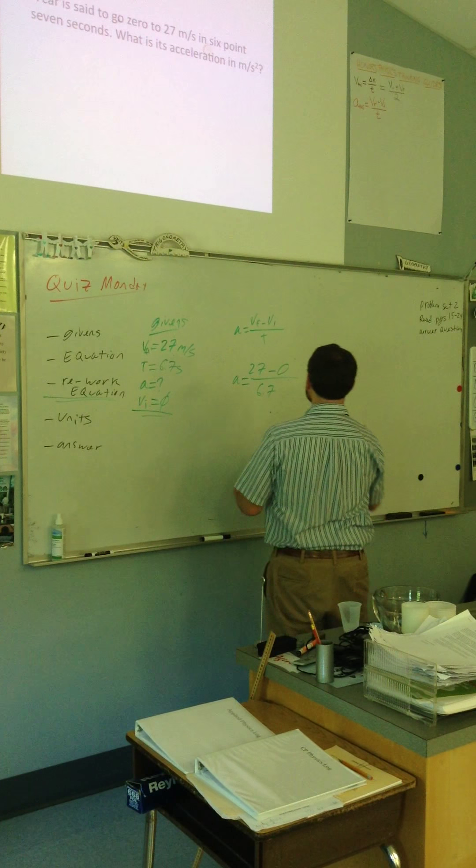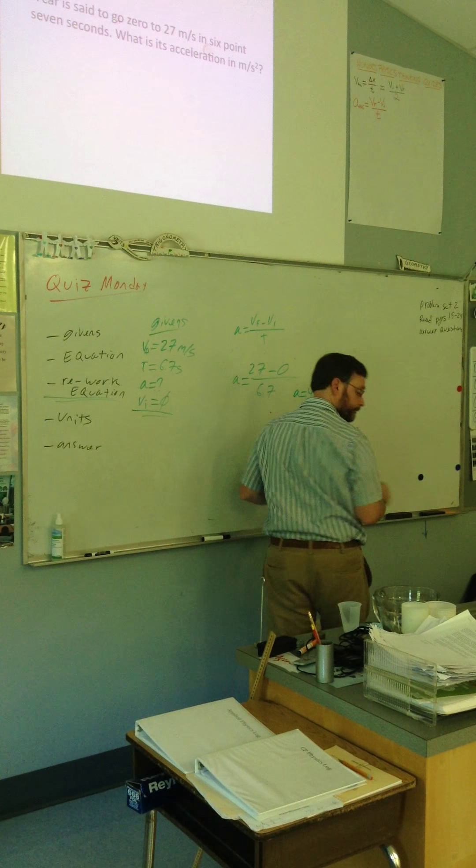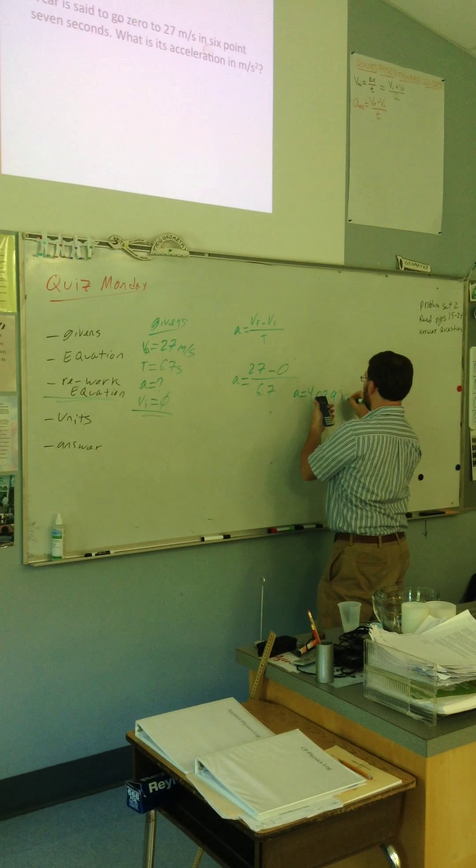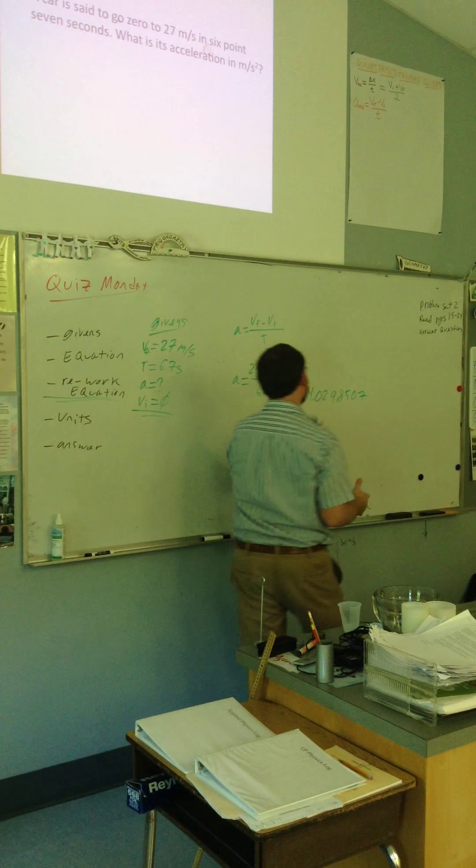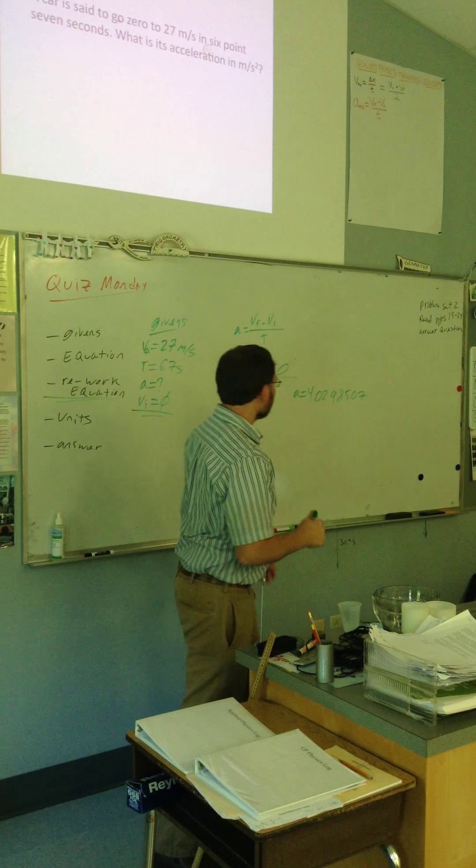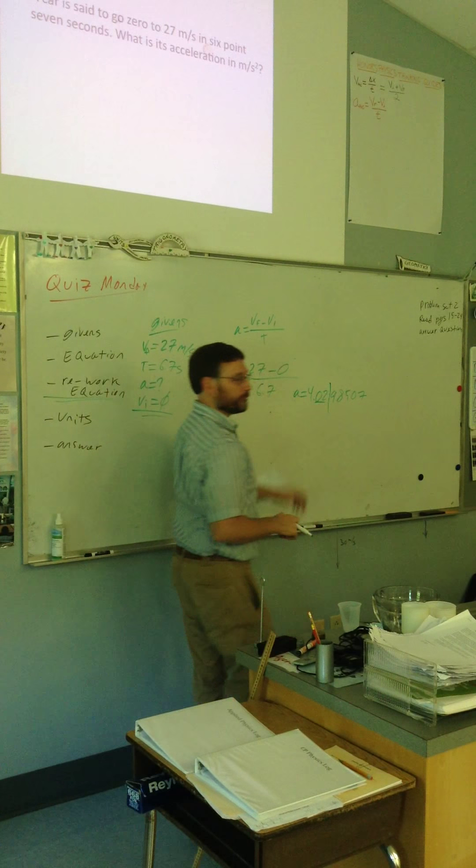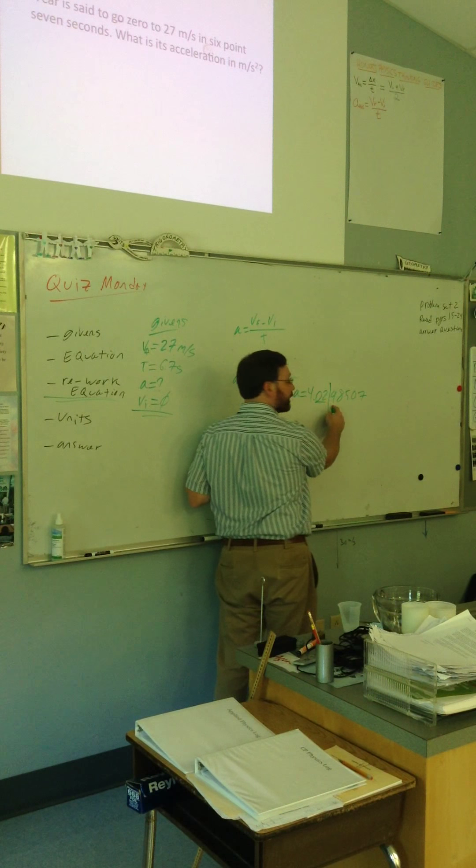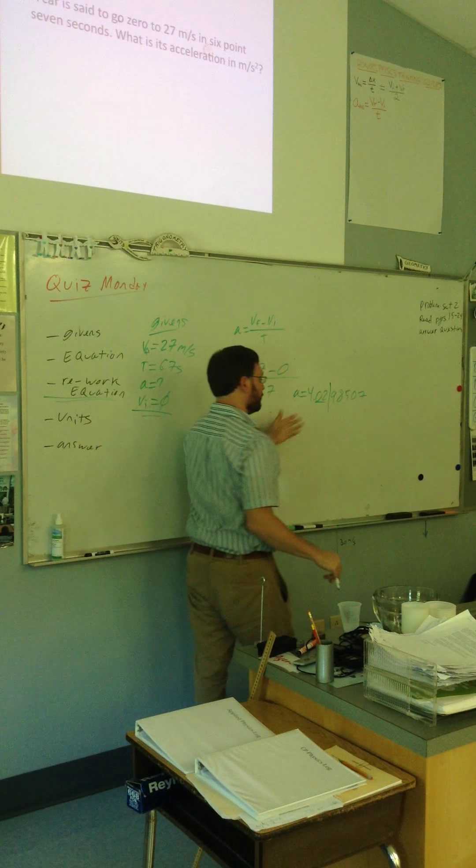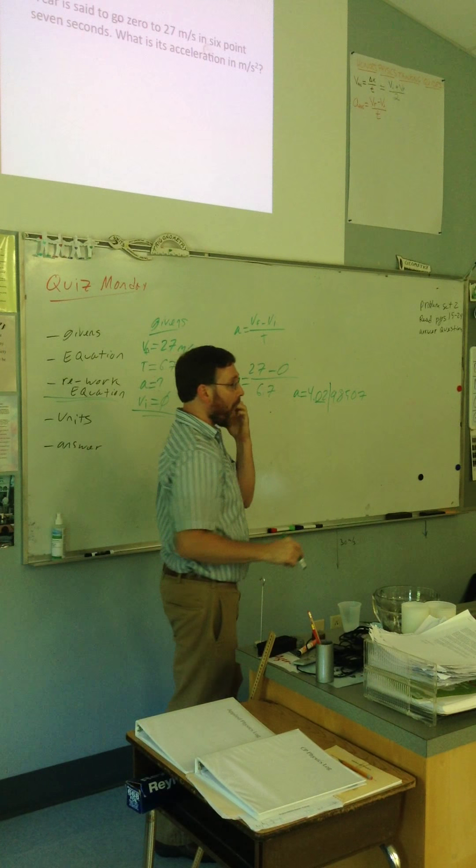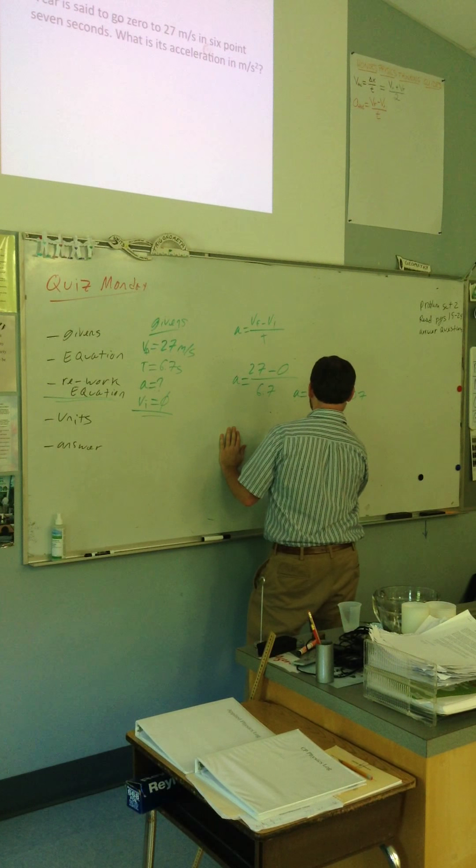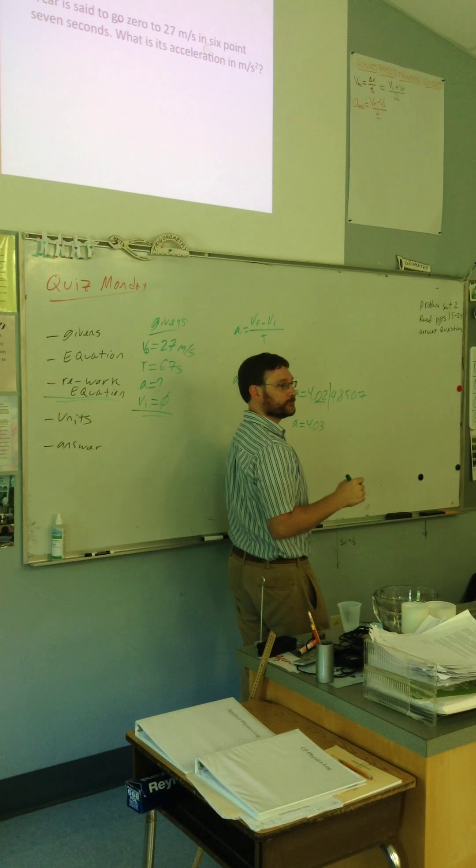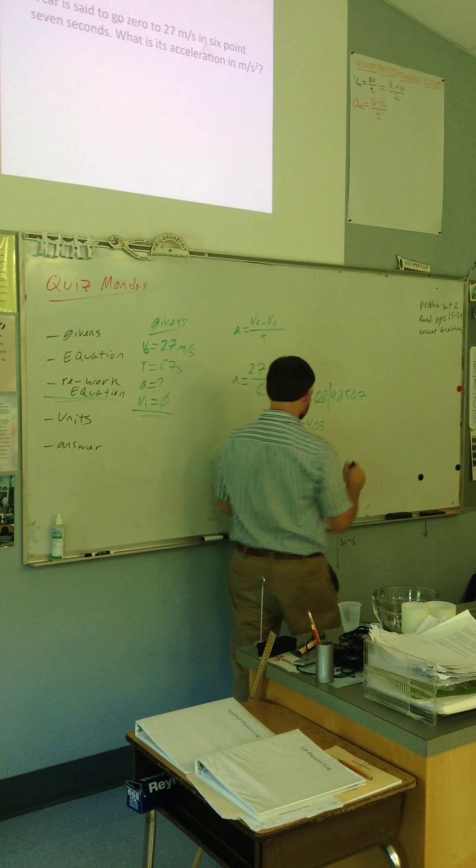And this gives me, for my acceleration, it gives me 4.0298507. So, when you have an answer that's this long, all I really care about are two decimal places past the decimal point. But, I want you to look at that number, and round up. So, what would this be? Right, so, our acceleration here is going to be 4.03. What are the units for acceleration? Meters per second squared. Meters per second squared.